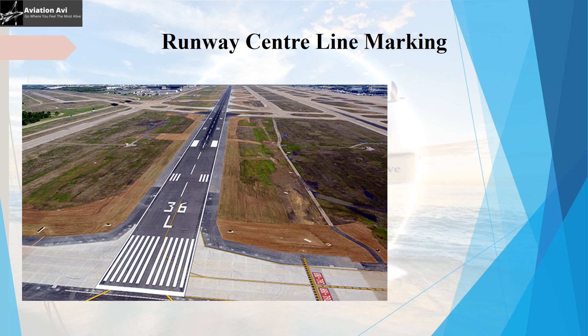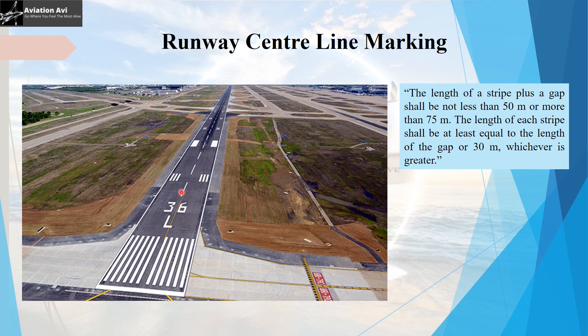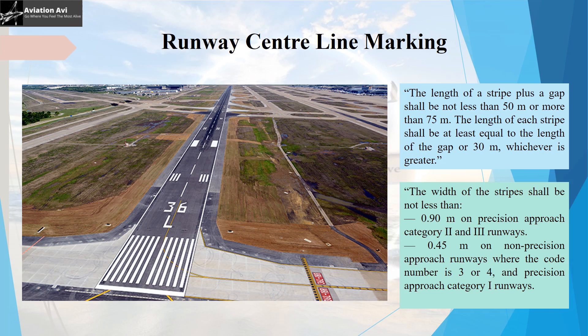The next marking is the runway centerline marking, which is a combination of stripes and gaps present between the two runway designation markings on each end. As per ICAO Annex 14, the length of one stripe plus one gap together shall not be less than 50 meters or more than 75 meters, and each stripe length must equal the gap length and be not less than 30 meters. The stripe width shall be at least 0.9 meters on Category 2 or 3 precision approach runways, or 0.45 meters on non-precision approach runways (code 3 or 4) and Category 1 precision approach runways.